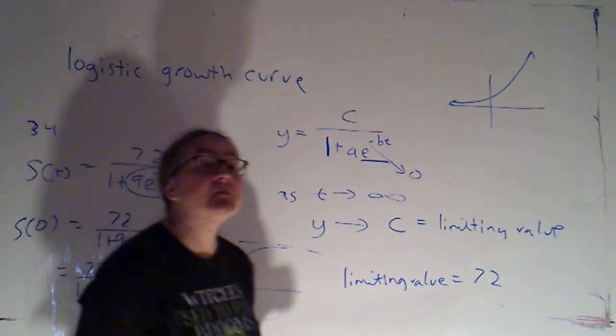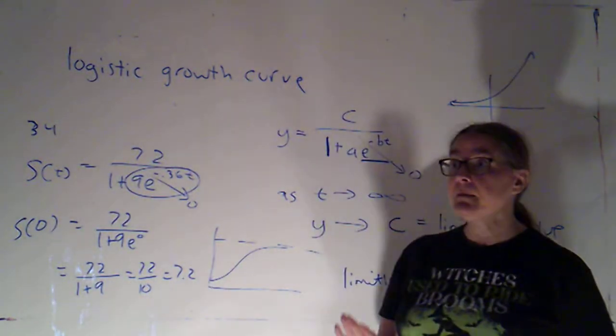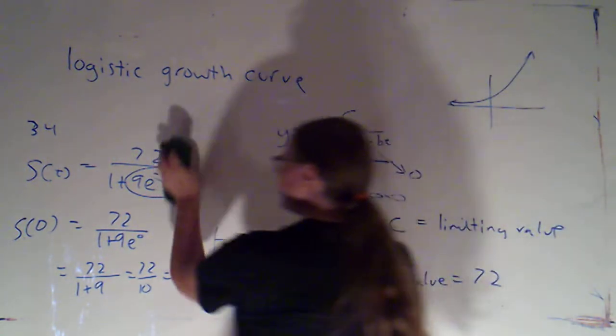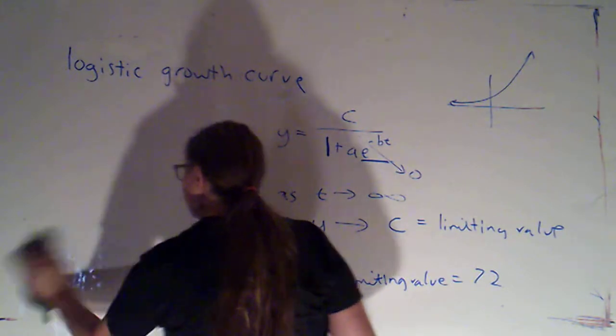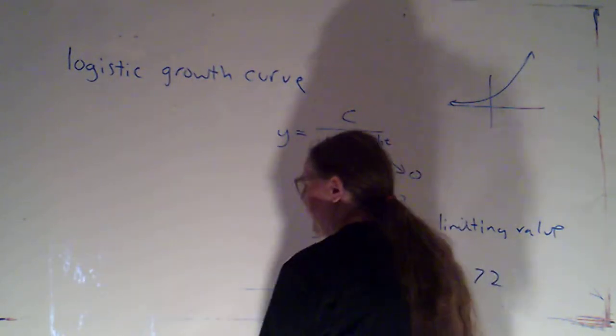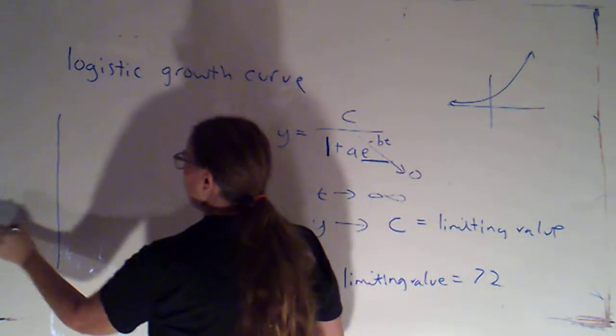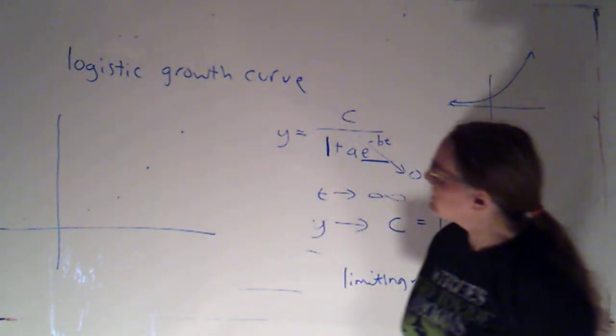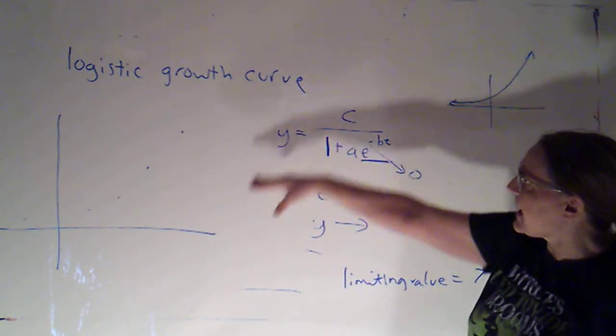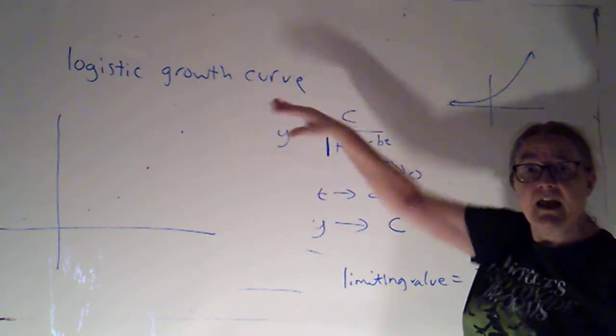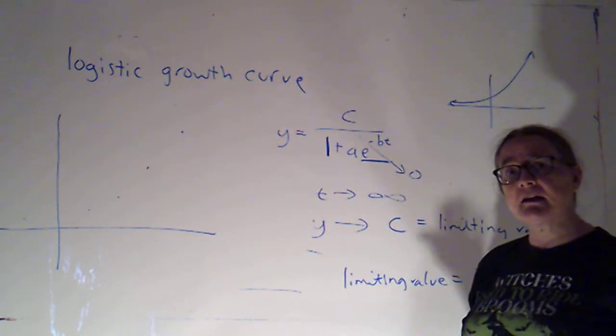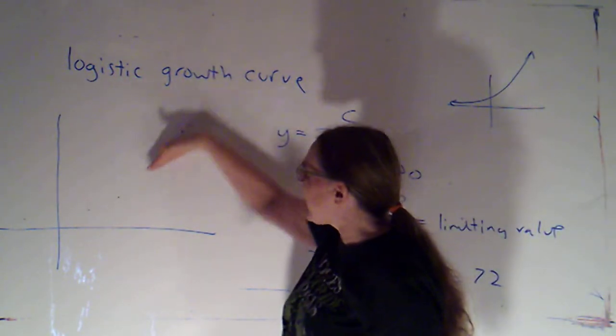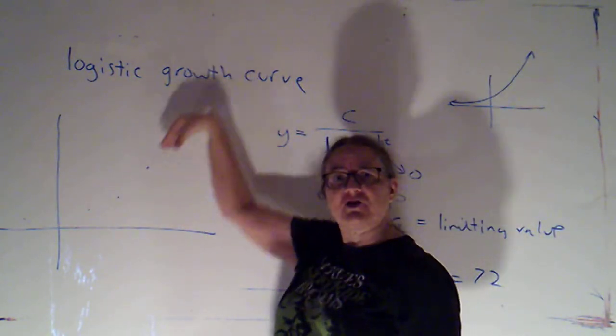I should mention, there is one other topic in the book that we are not covering, and that's regression. What regression is, is essentially curve fitting. You get some data, you would have a table of values, and you plot those points. And if I plot some points, and they look like that, I might say, you know what, that looks kind of like an exponential growth curve. And so, then you would try to find the exponential function whose graph best matches the data that you have.